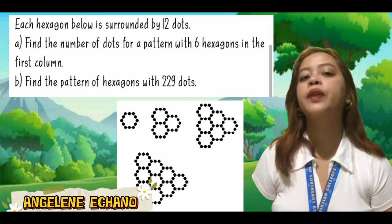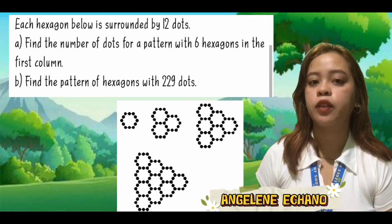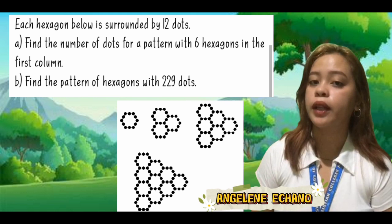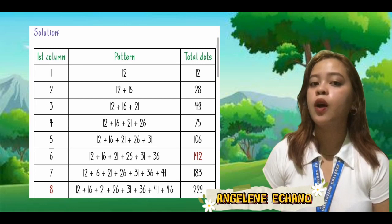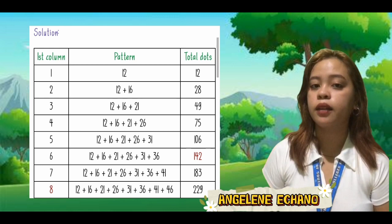Here we will look at an advanced example of the finding a pattern method. Each hexagon below is surrounded by 12 dots. Letter A: find the number of dots for a pattern with 6 hexagons in the first column. Here's the solution — the number of dots for a pattern with 6 hexagons in the first column is 142.